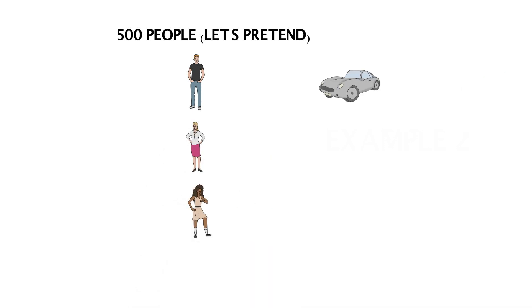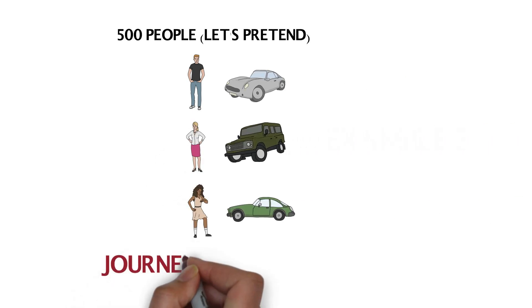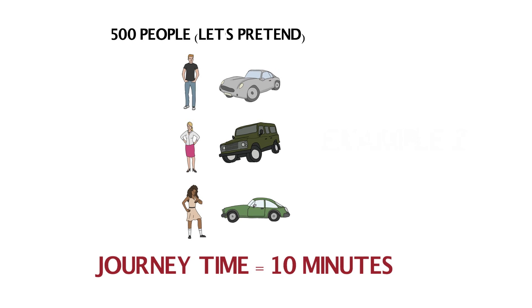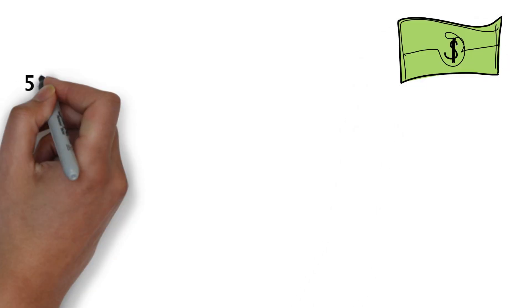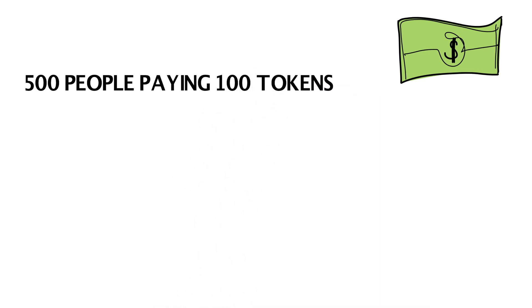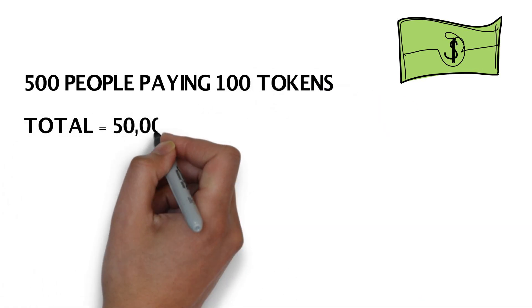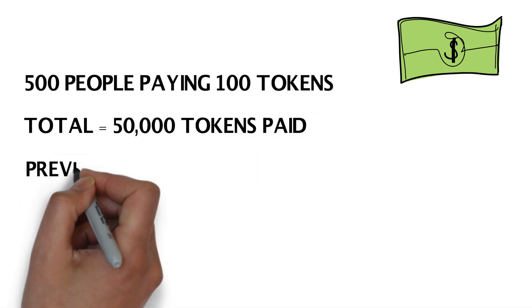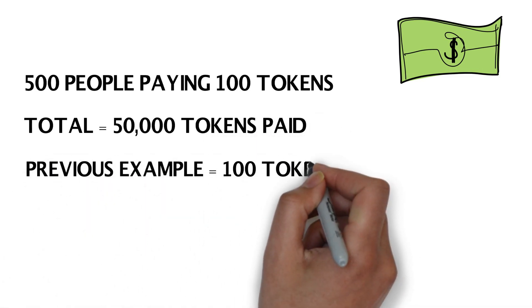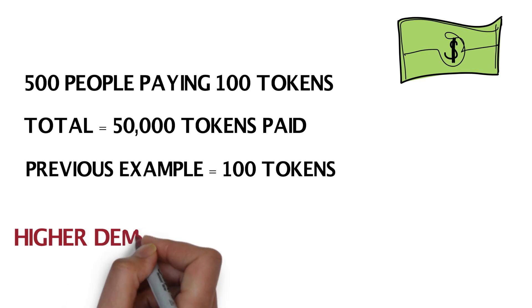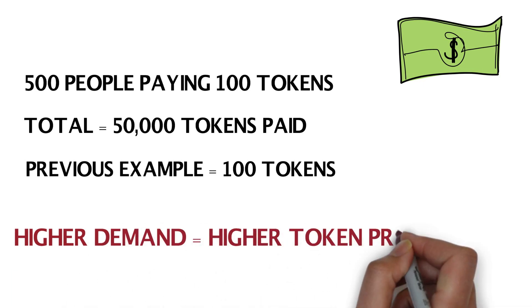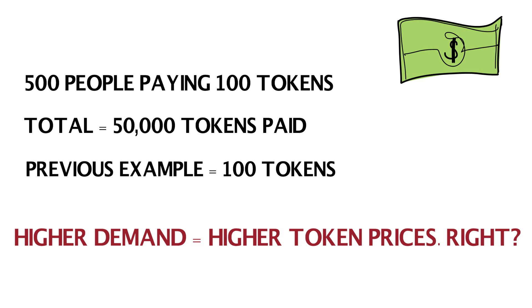We're looking at Carfair again, but now we're going to imagine there are 500 customers. To keep it simple, we'll imagine everyone has the same journey time as Adam — 10 minutes. At the end of the 10 minutes, 500 people each have to buy 100 tokens. In total, this is 50,000 tokens. After we added more people, this number rose from 100 to 50,000 tokens. From this, we can see that more people using the application clearly results in higher demand for tokens. Higher demand equals higher token prices, right? Not exactly.